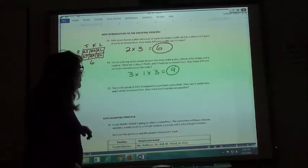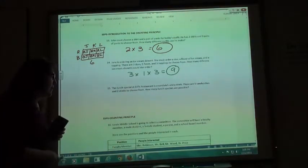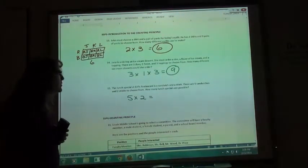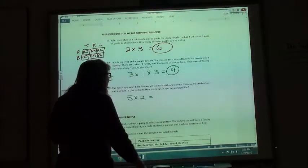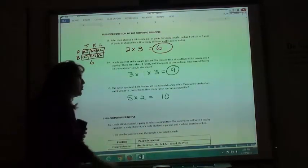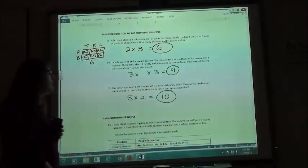Lunch special at Bill's restaurant is a sandwich and a drink. There are five kinds of sandwiches and two drinks. How many lunch specials are possible? There would be ten different ways I could do that if I have five sandwiches and two drinks.